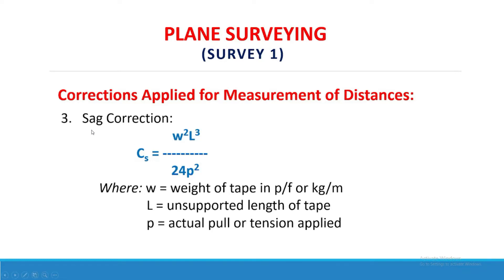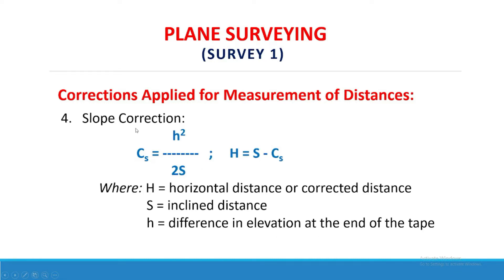Next, sag correction with the formula C sub S equals W squared times L cubed, all over 24 P squared, where W is the weight of tape in pounds per foot or kilogram per meter, L is the unsupported length of tape, and P is the actual pull or tension applied.